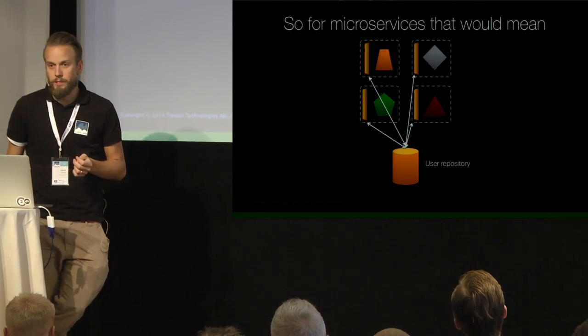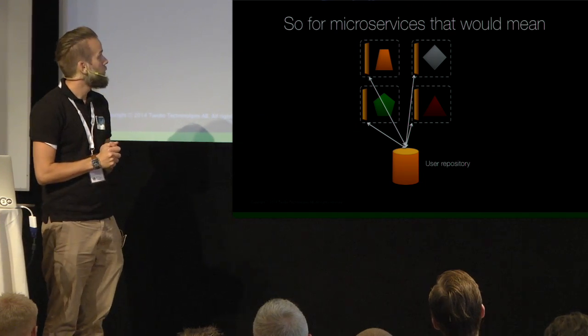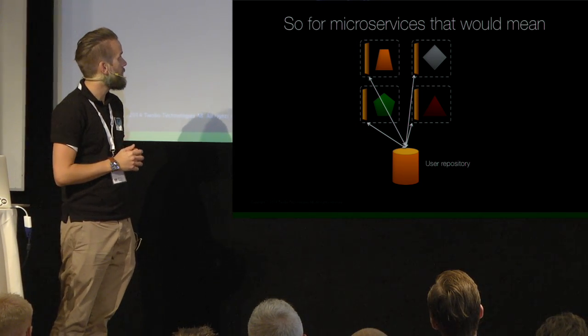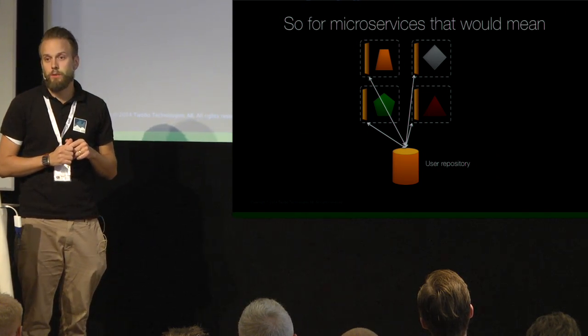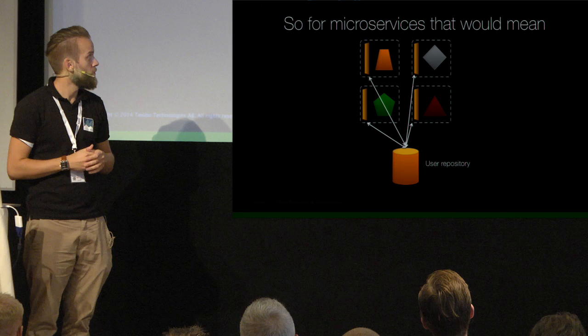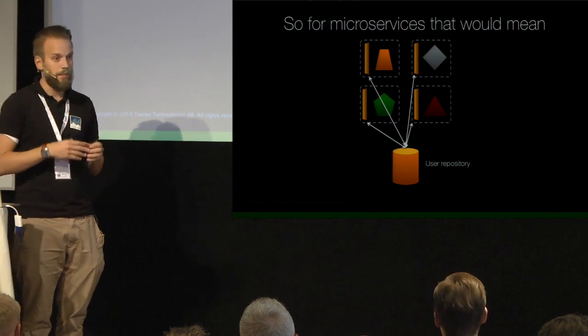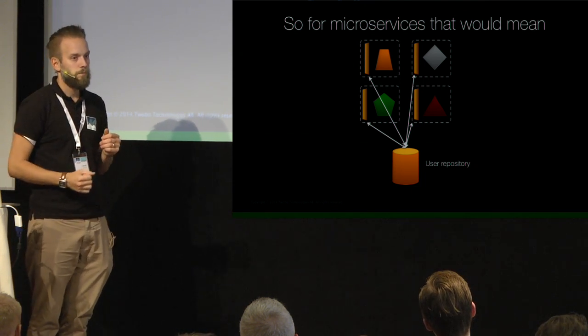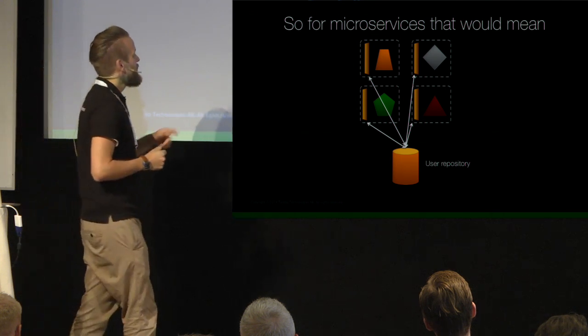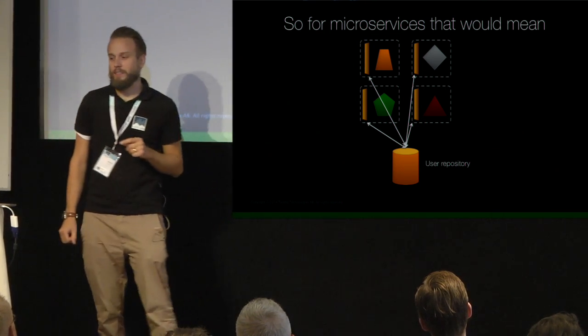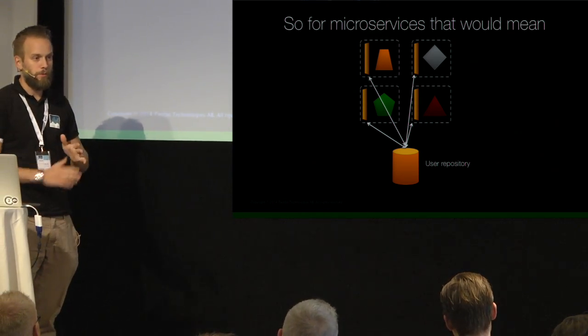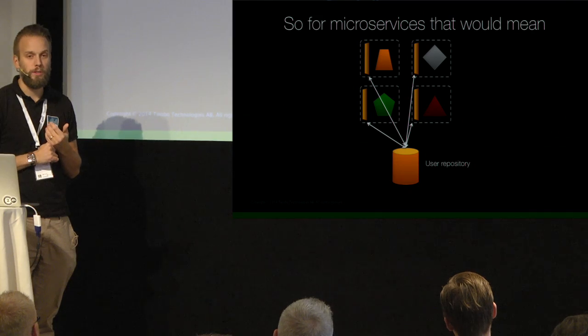For a microservice, each component would have its own request handler that would also have to deal with the identity coming in. It would have to call the particular user repository to find the information it needs, populate its object, and then handle the request. If you chain these, you have a lot of the same thing going on - you have to handle different paths depending on where the request came from and what information you need. It's not really a fantastic solution for microservices.